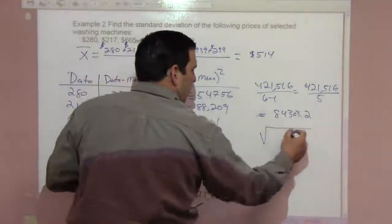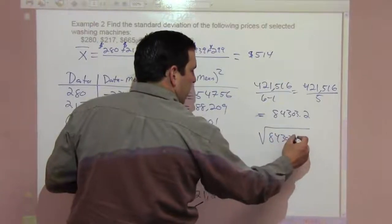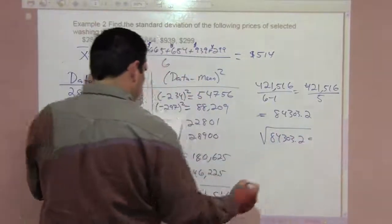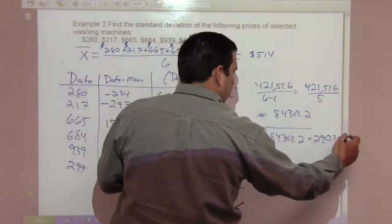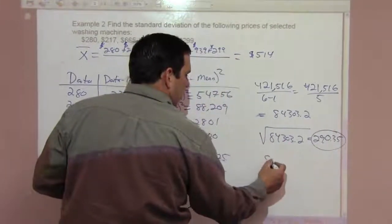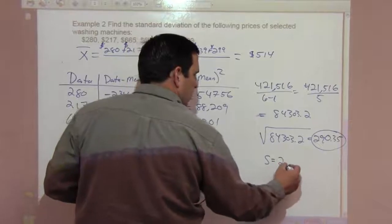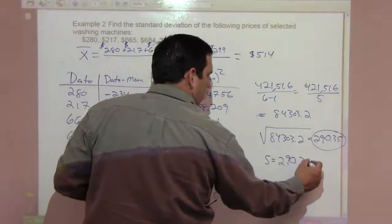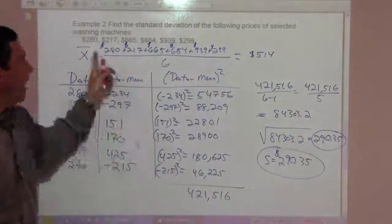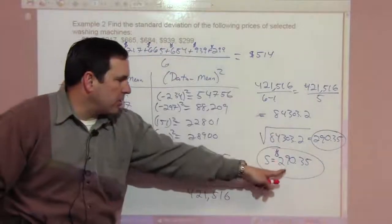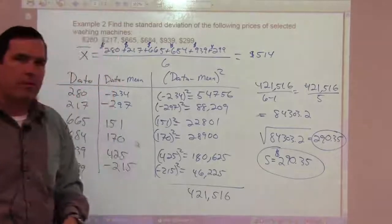We take the square root of 84,303.2 and we get 290.35. So our standard deviation s is going to be 290.35 dollars. This data has an average of 514 with a standard deviation of 290.35.